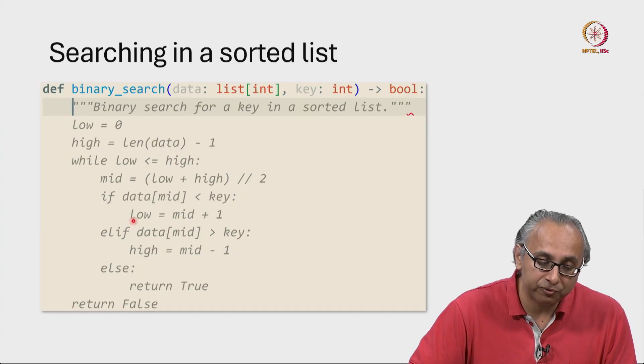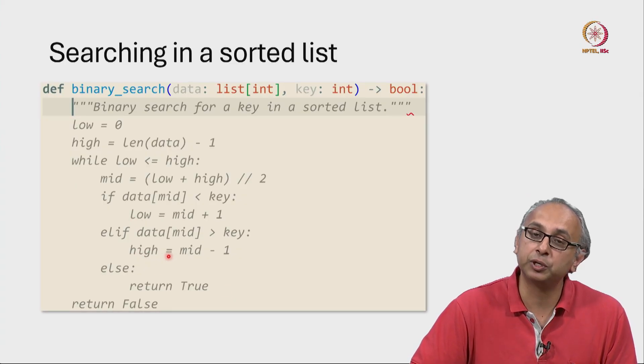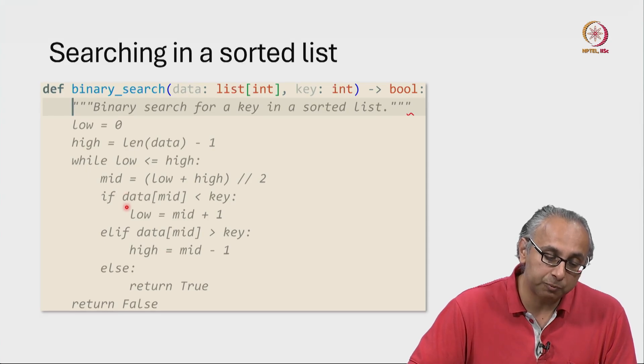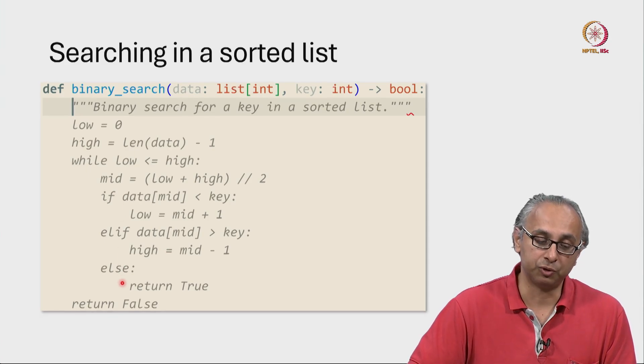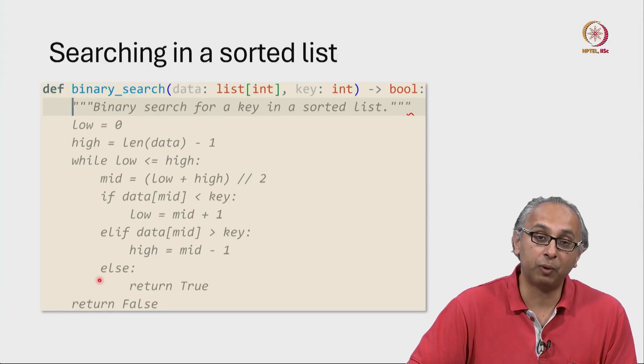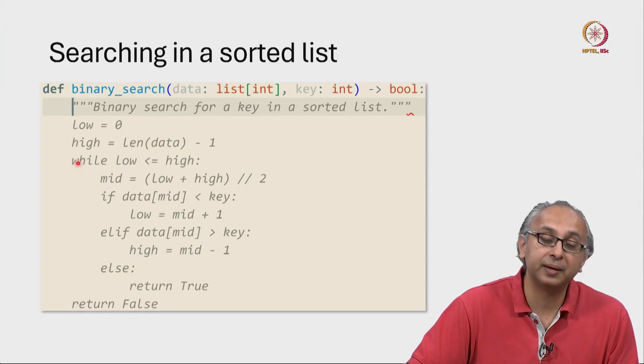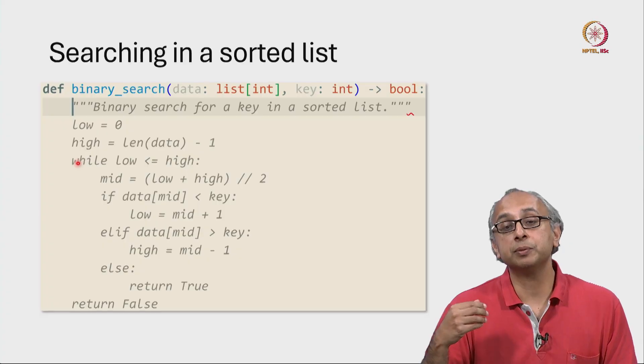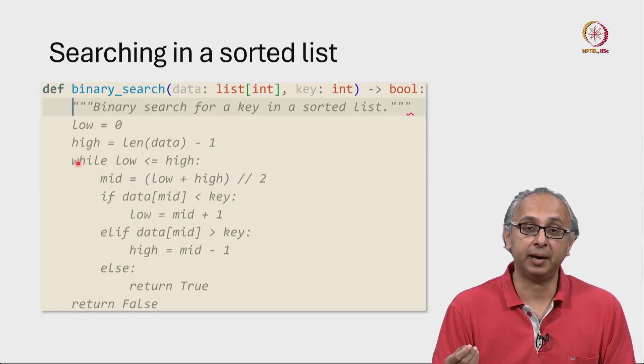Now notice that if we are in either of the first two conditions, we are done with this if, elif, else situation. But we are also done with the body of the while loop. So we would actually loop back and try again for this modified low or this modified high.